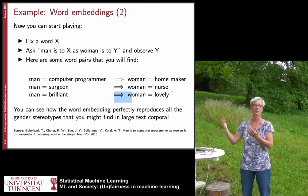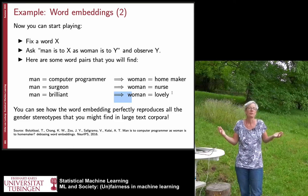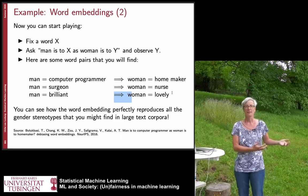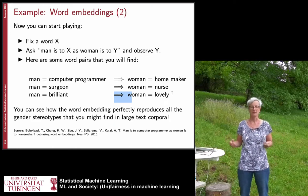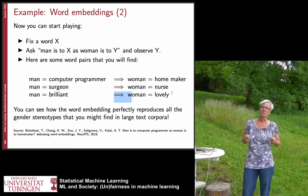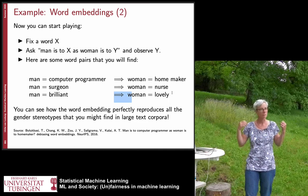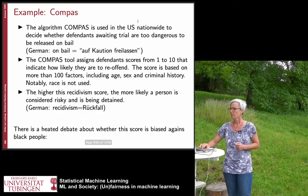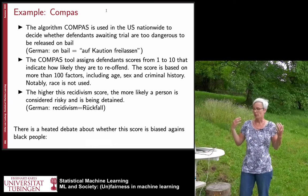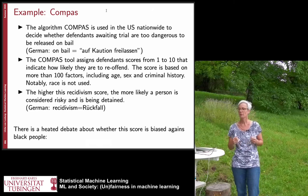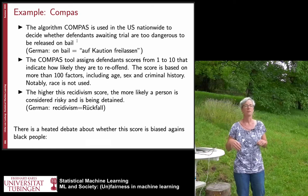If you use such a word embedding and apply it to other analyses, you will have these prejudices in there and need to be aware of that. The last example to discuss at more length is the COMPAS example, mentioned already in the beginning of the lecture. The COMPAS system is used in the US nationwide to decide whether defendants awaiting trial are too dangerous to be released on bail.